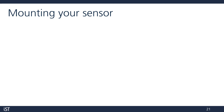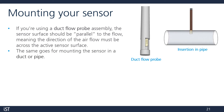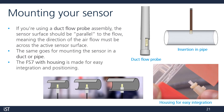We're often asked how the sensor should be mounted in the flow path. If you're using a duct flow probe, be sure the sensor surface is parallel with the flow, meaning the flowing gas passes smoothly over the active sensor surface. The same goes for a duct or pipe. One useful benefit of the FS7 with housing is a small tooth on the side — many customers add a notch in the hole they drill in their pipe, making it easy to position the sensor perfectly parallel with the flow.